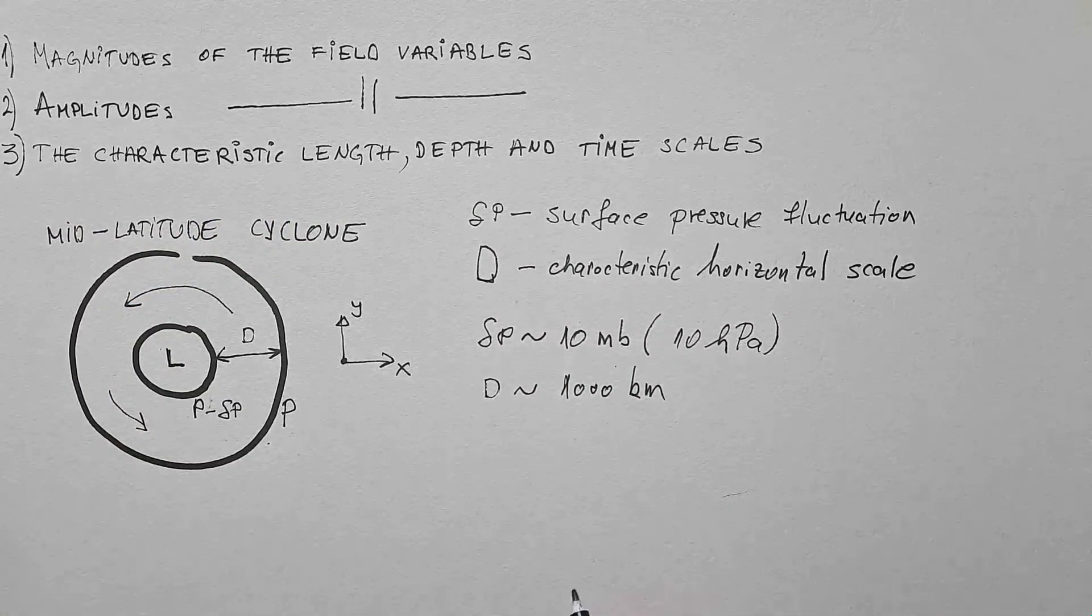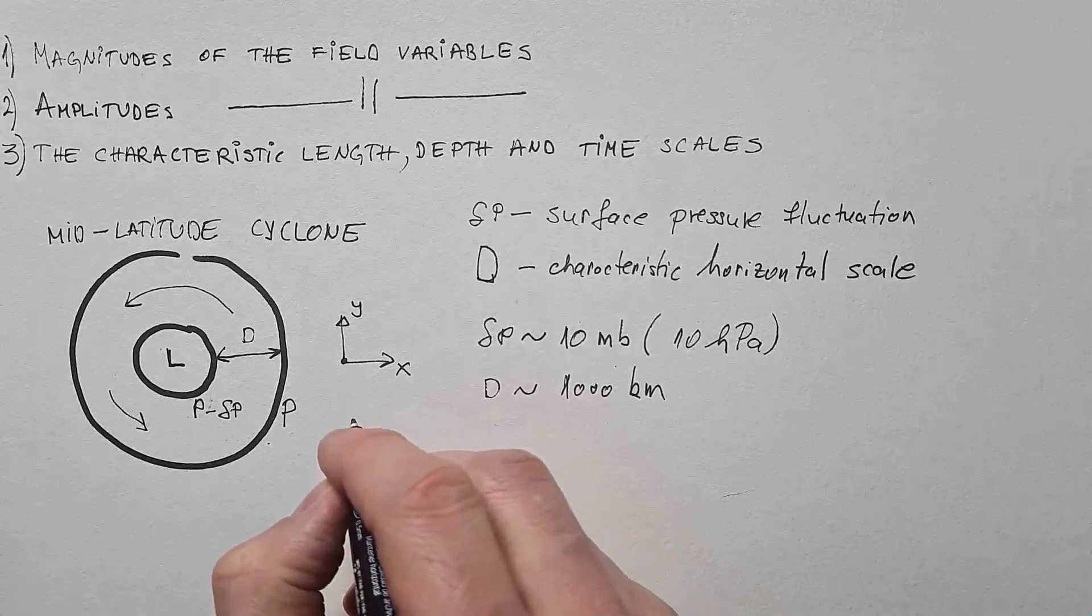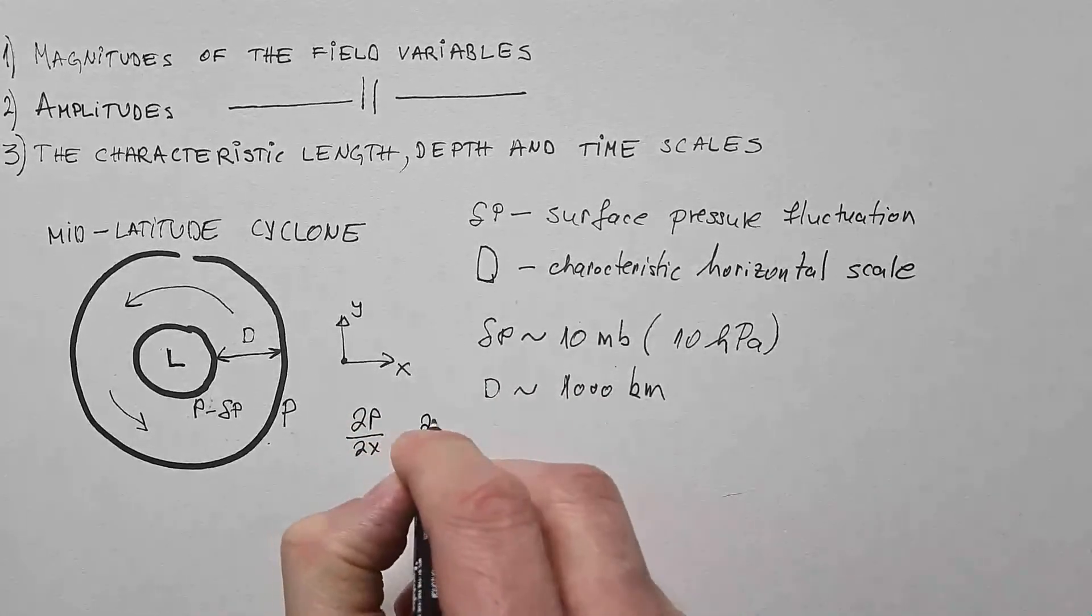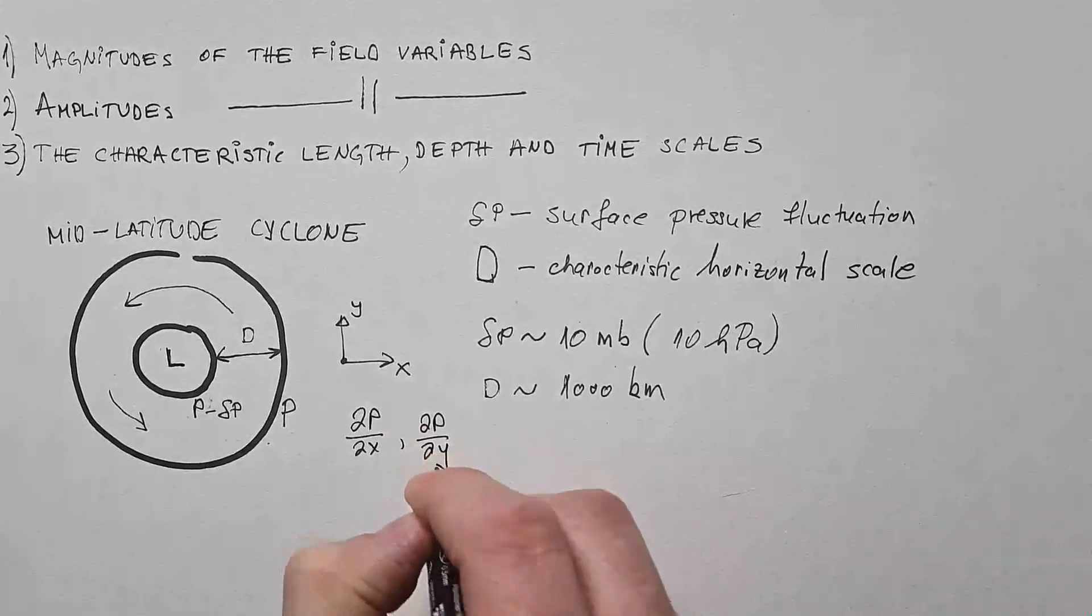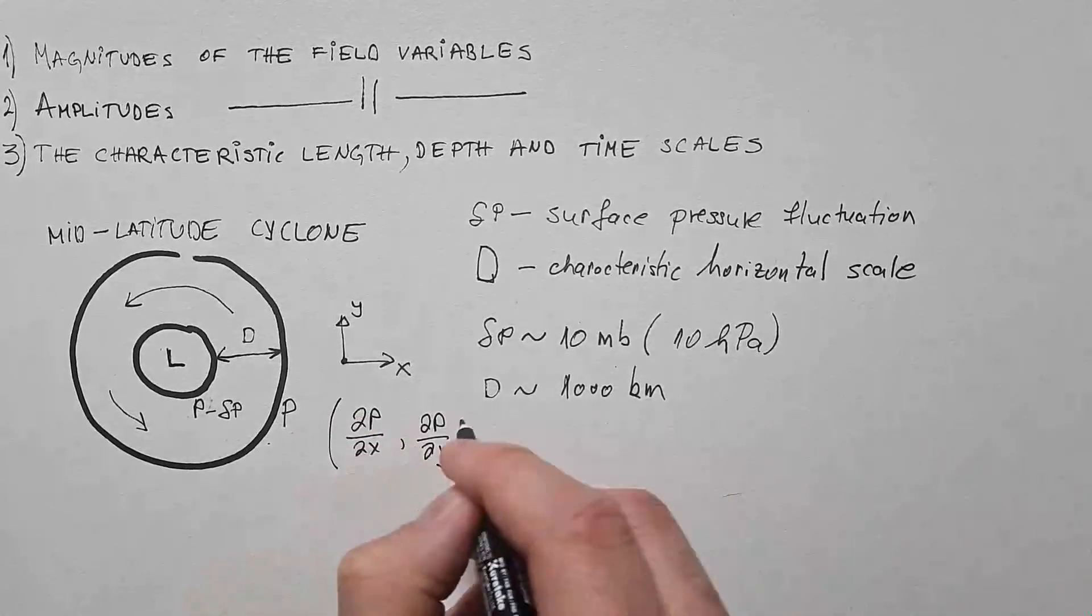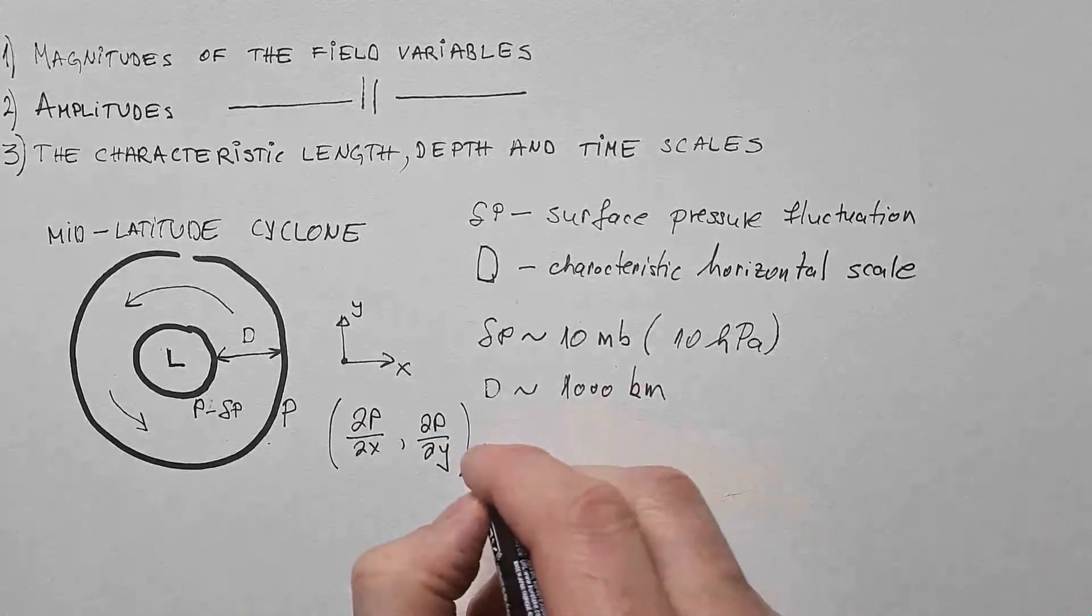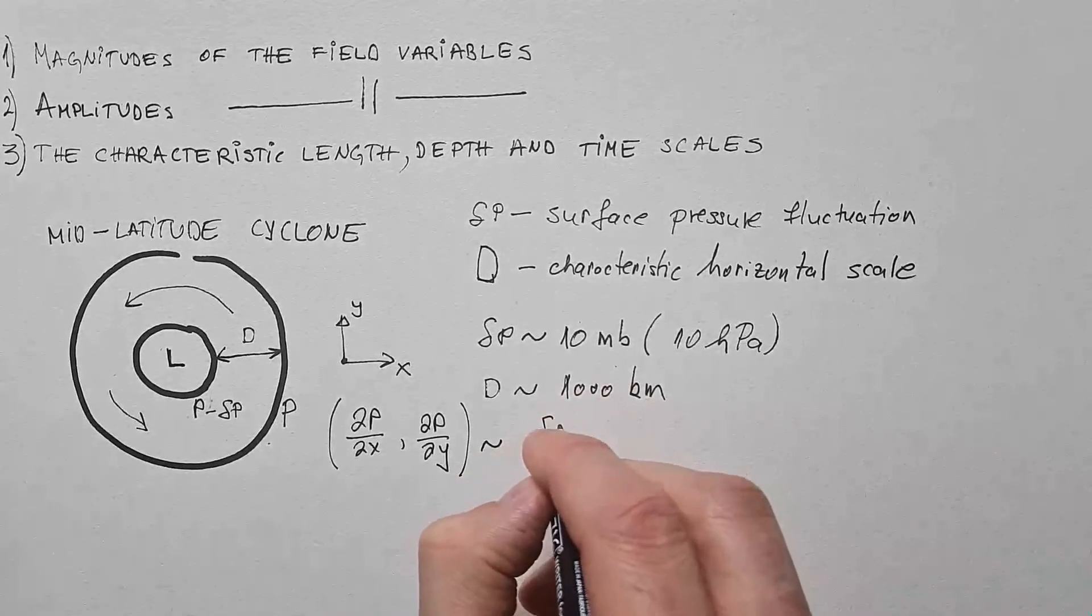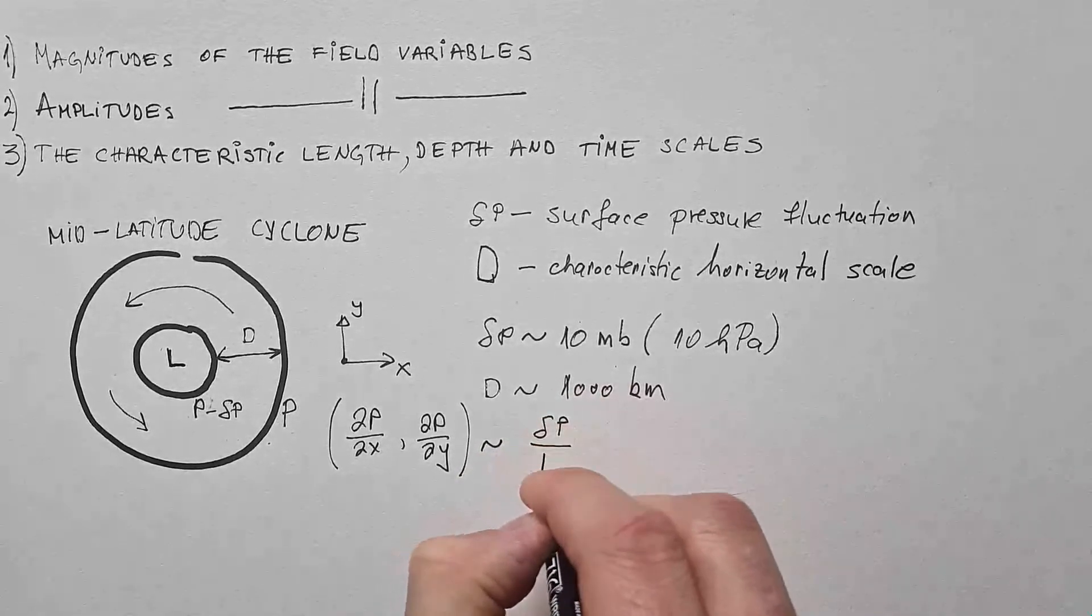Now, from my video on pressure gradient force, we know that horizontal pressure gradients are delta P delta x and delta P delta y in the x and y directions. Which means that both of these are of the order of delta P over D.